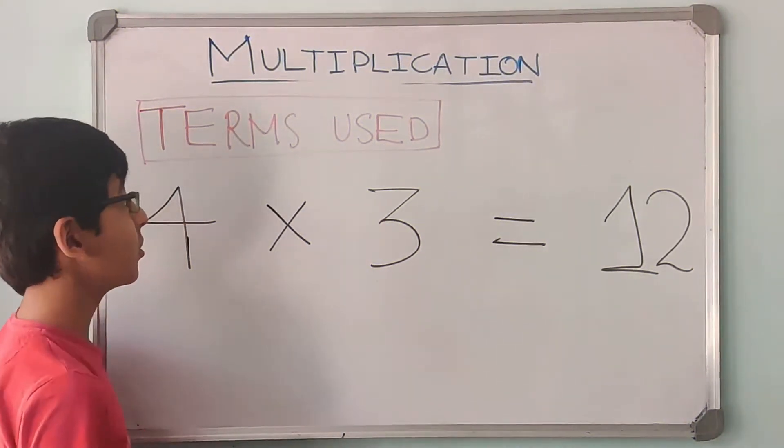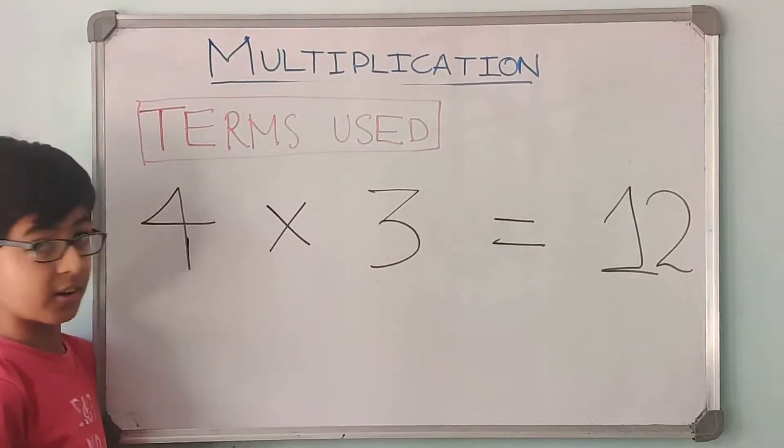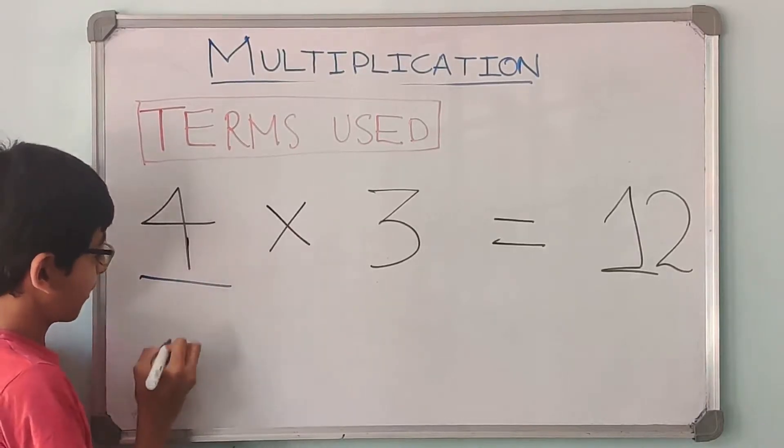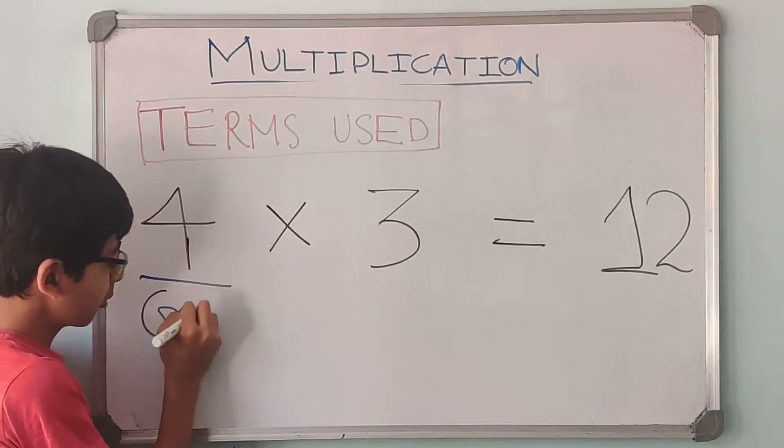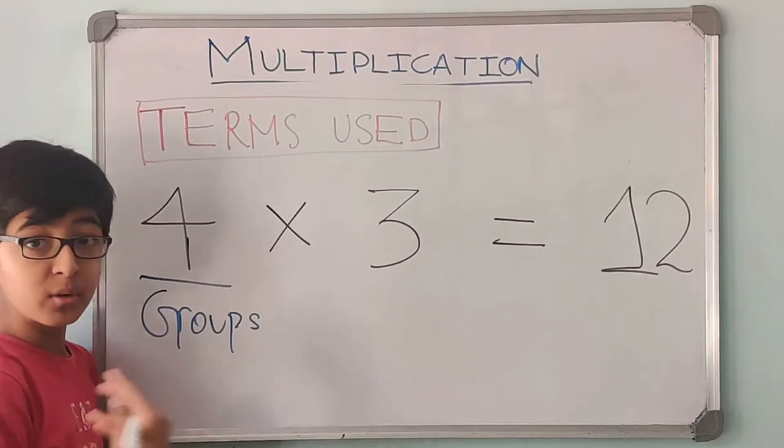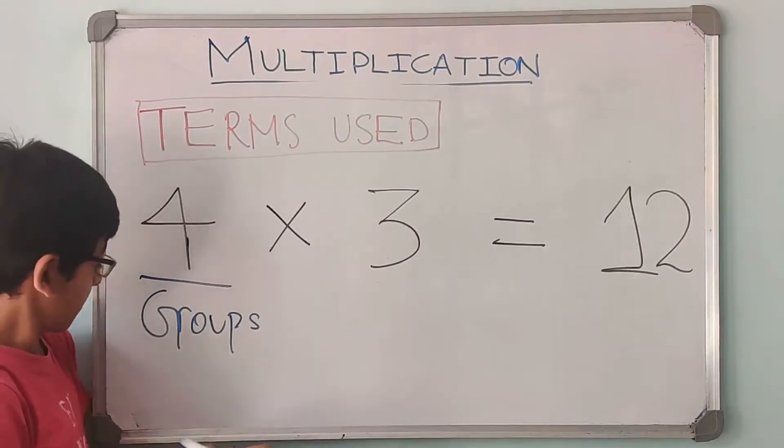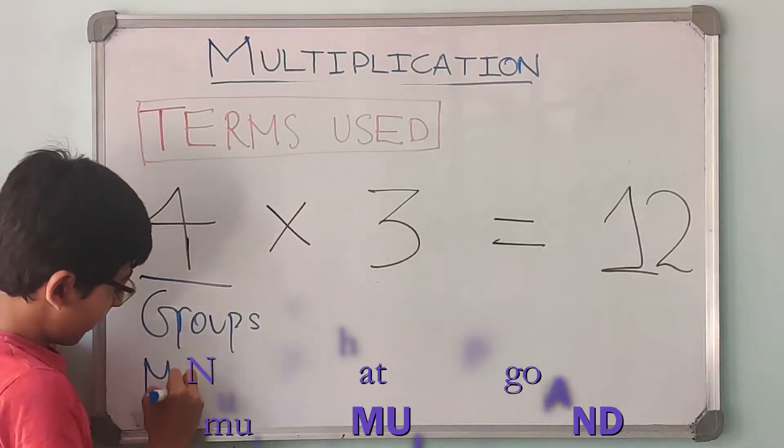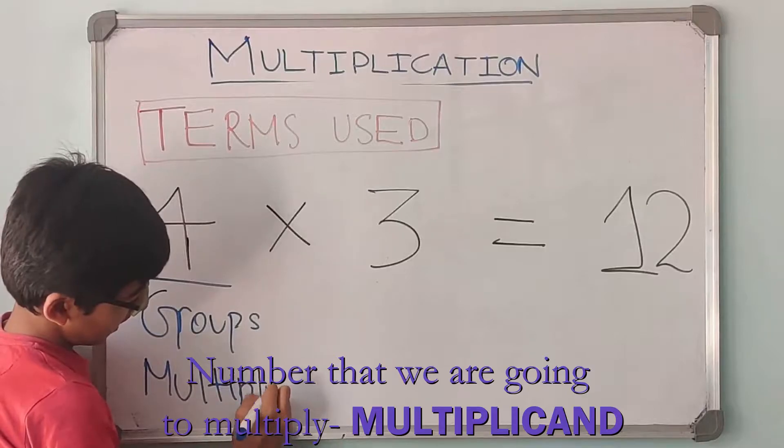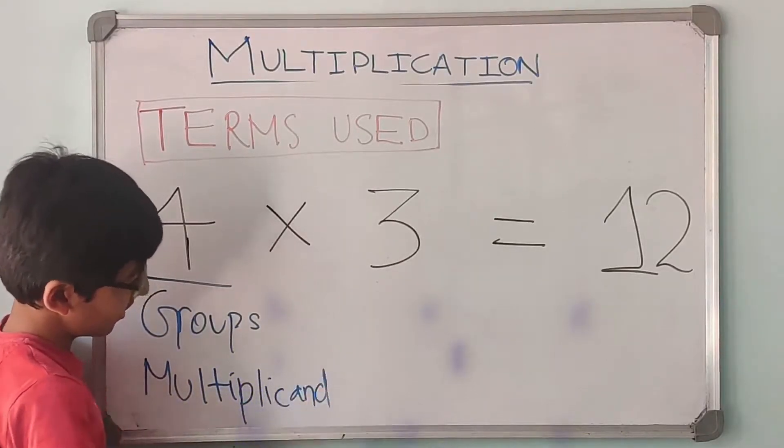Now let us know the terms that are used in multiplication. So the first number is the number of groups, the number of items, and this number that we are going to multiply is called the multiplicand. M-U-L-T-I-P-L-I-C-A-N-D.